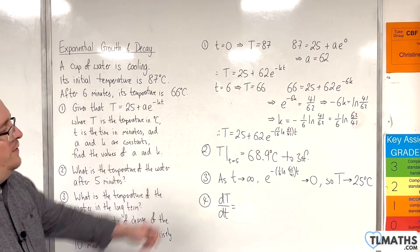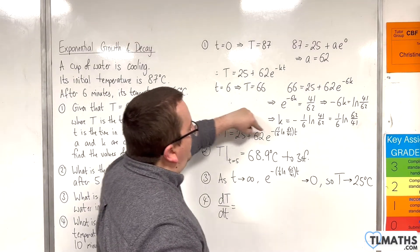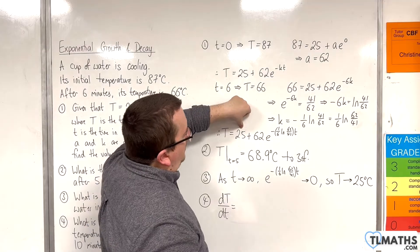Okay? So we need to look at this, and we need to find the gradient function. So 25 differentiates to 0.